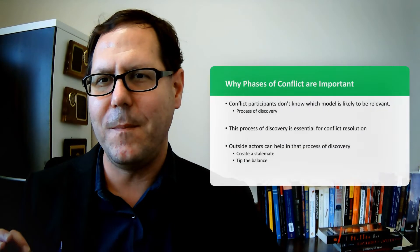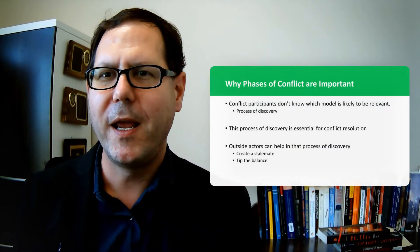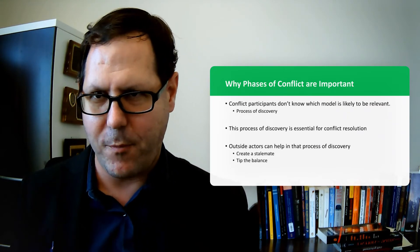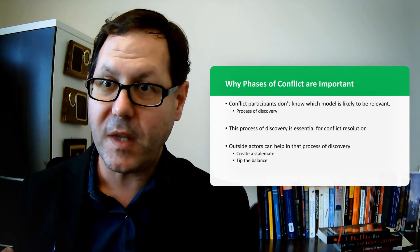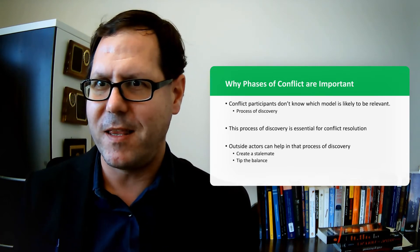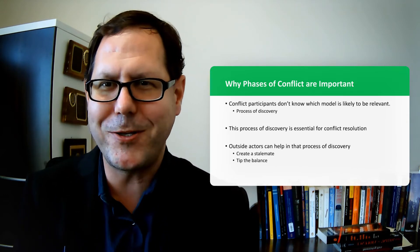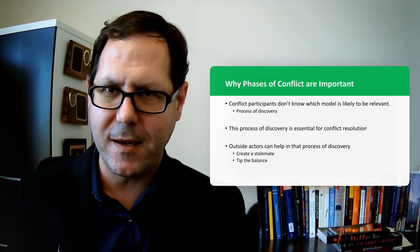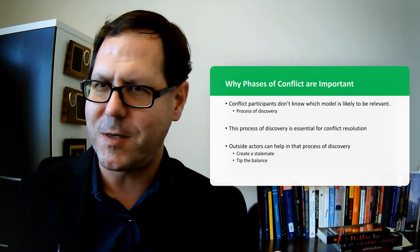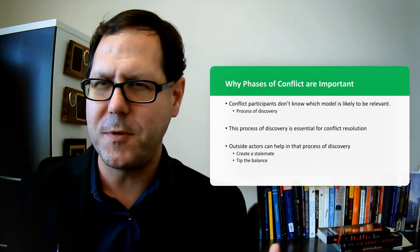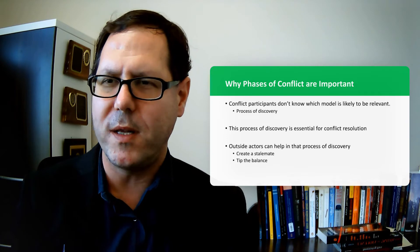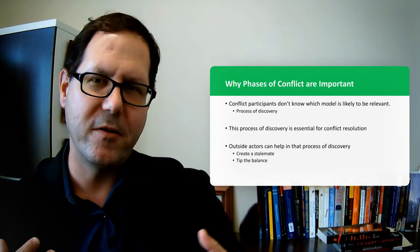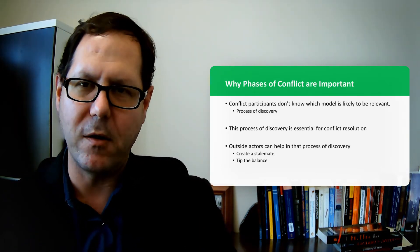And I want to flag these two different ways that this might play out because parties don't actually know which model is likely going to be relevant. They don't know when they start that process of escalation if they're going to be able to escalate to victory or if they're going to escalate and just find themselves in a really bad, horrific situation with no easy way out. We can think about this conflict as maybe a process of discovery. And just like with the rational choice approach where conflict helps to clarify what's likely to happen from fighting for parties who maybe had different perspectives on this.